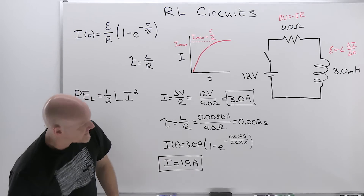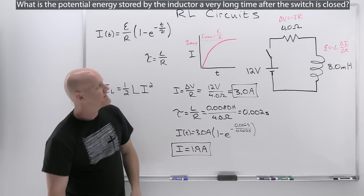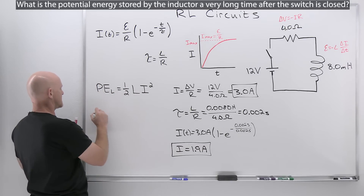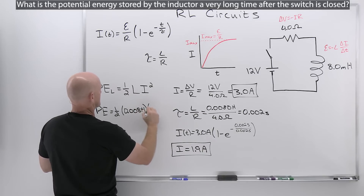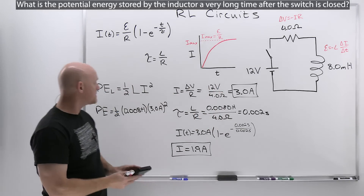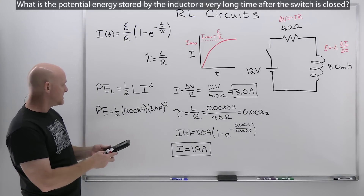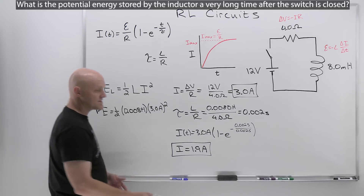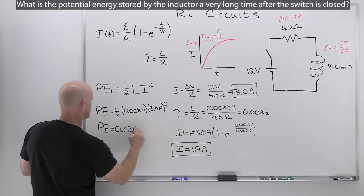Part 5: what is the potential energy stored by the inductor a very long time after the switch is closed? At very long times, the current has reached its maximum of 3.0 amps. Using U = ½LI²: U = 0.5 × 0.008 H × (3.0 A)² = 0.5 × 0.008 × 9 = 0.036 joules. That covers essentially all the types of calculations you'll encounter with RL circuits.